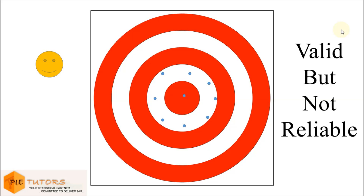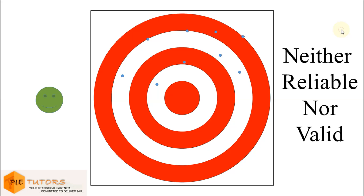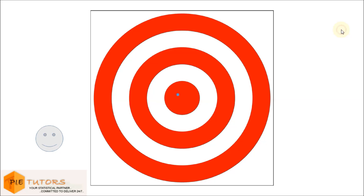The third person fires all his bullets and it is observed that all his bullets hit randomly anywhere on the dartboard. The firing consistency and firing accuracy for this person are both low. This scenario is analogous to an invalid and unreliable measure.